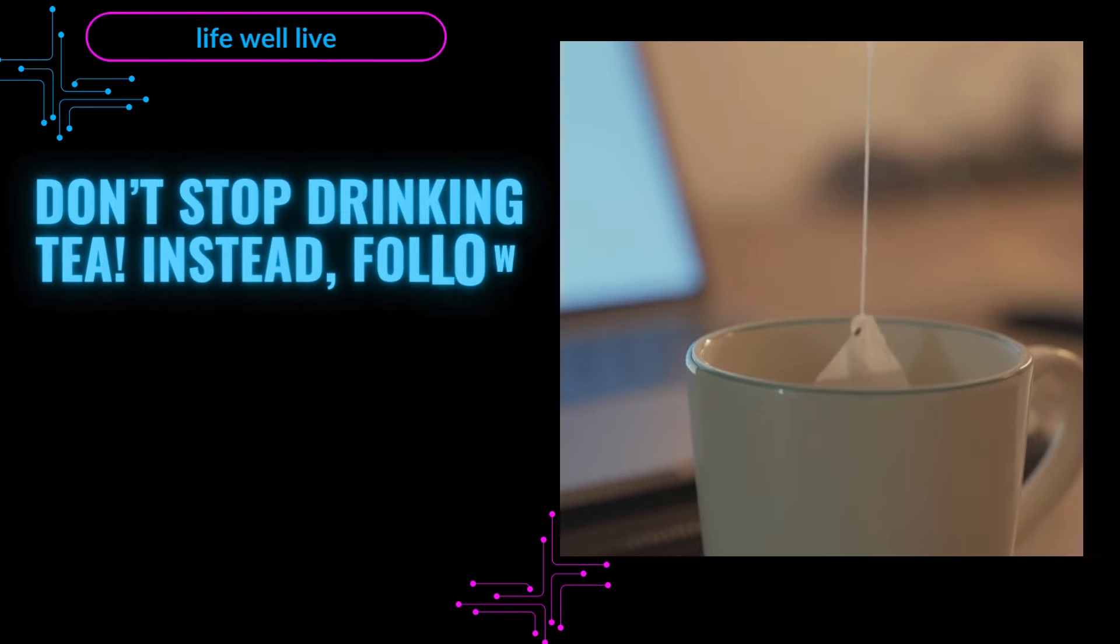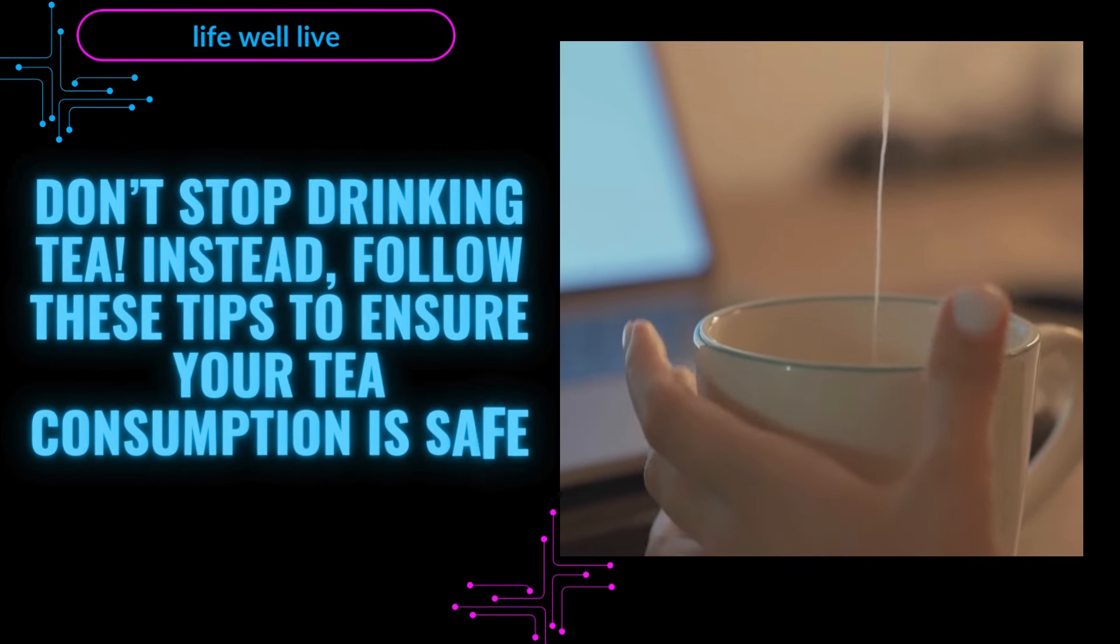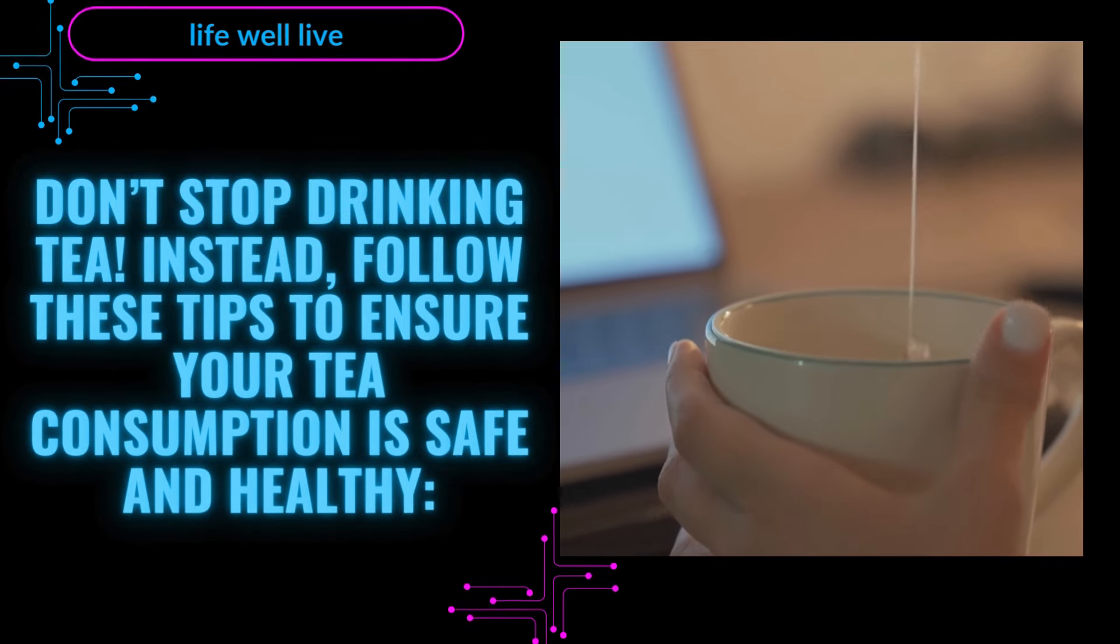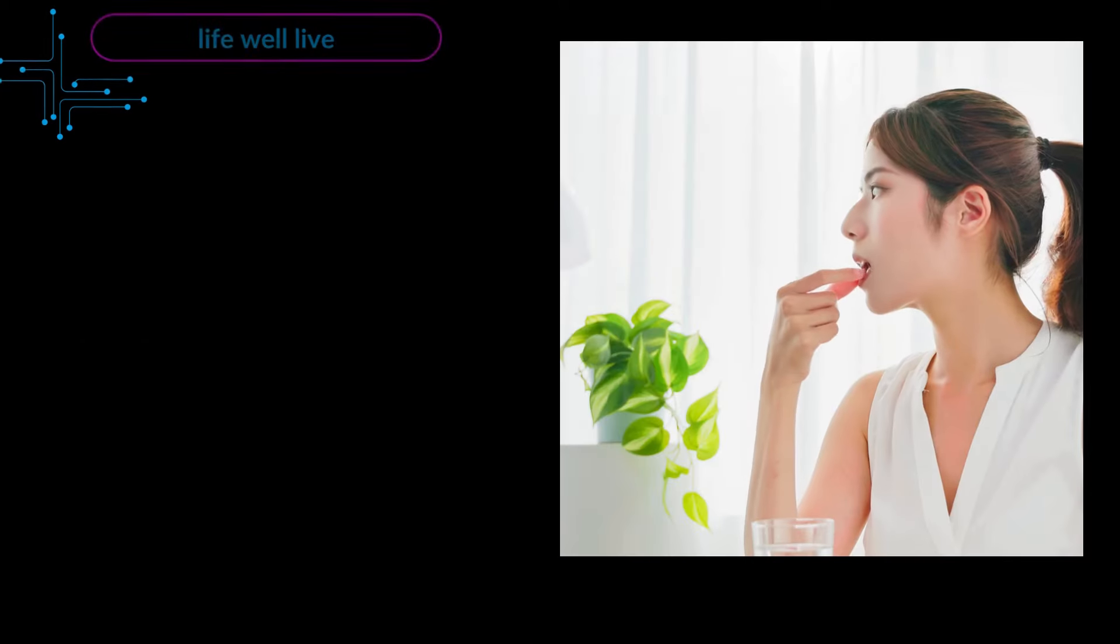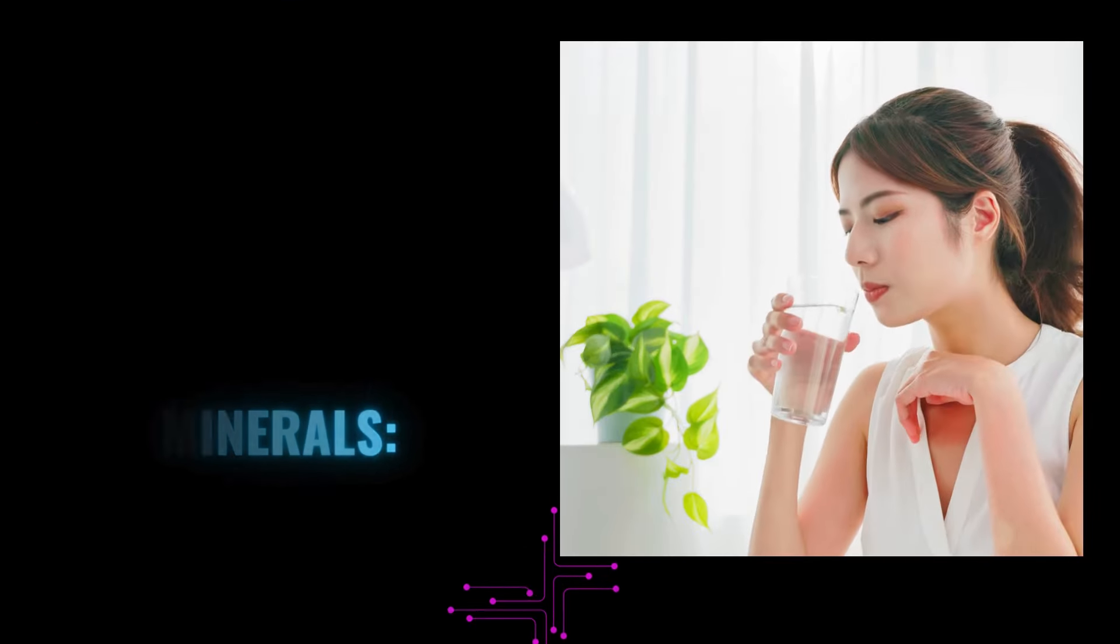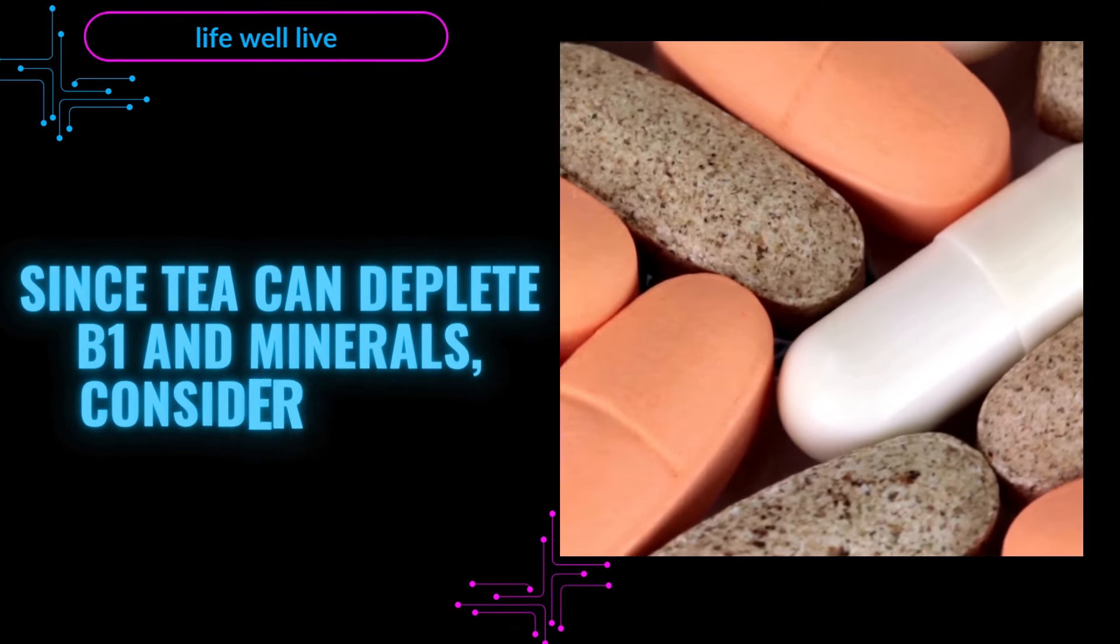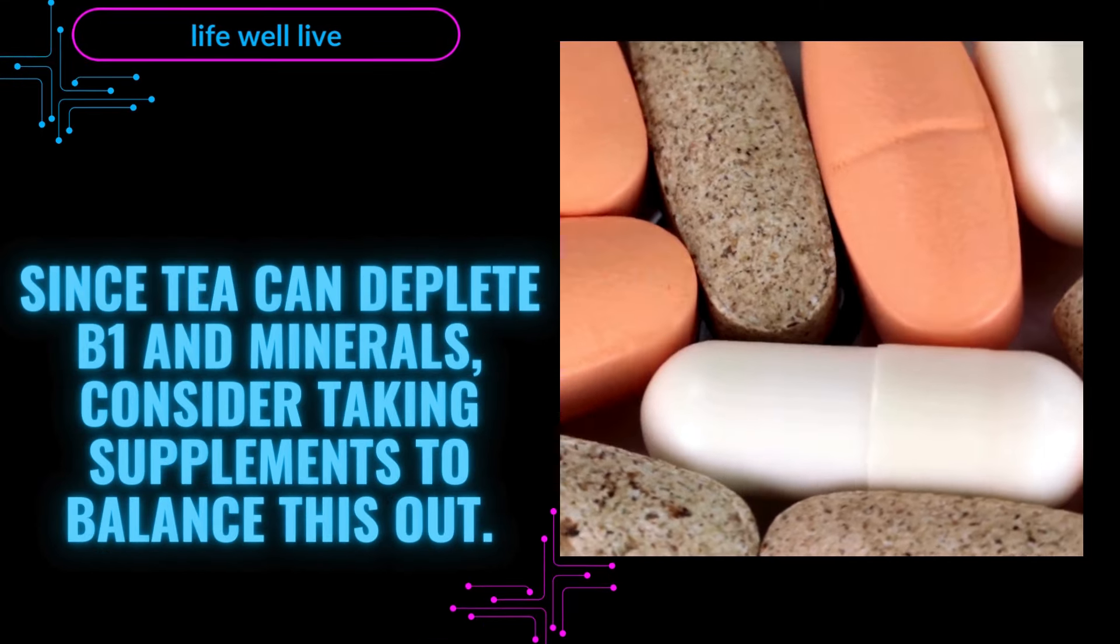Don't stop drinking tea. Instead, follow these tips to ensure your tea consumption is safe and healthy. Ensure your tea is organic to avoid pesticides and heavy metals. Supplement with vitamin B1 and minerals. Since tea can deplete B1 and minerals, consider taking supplements to balance this out.